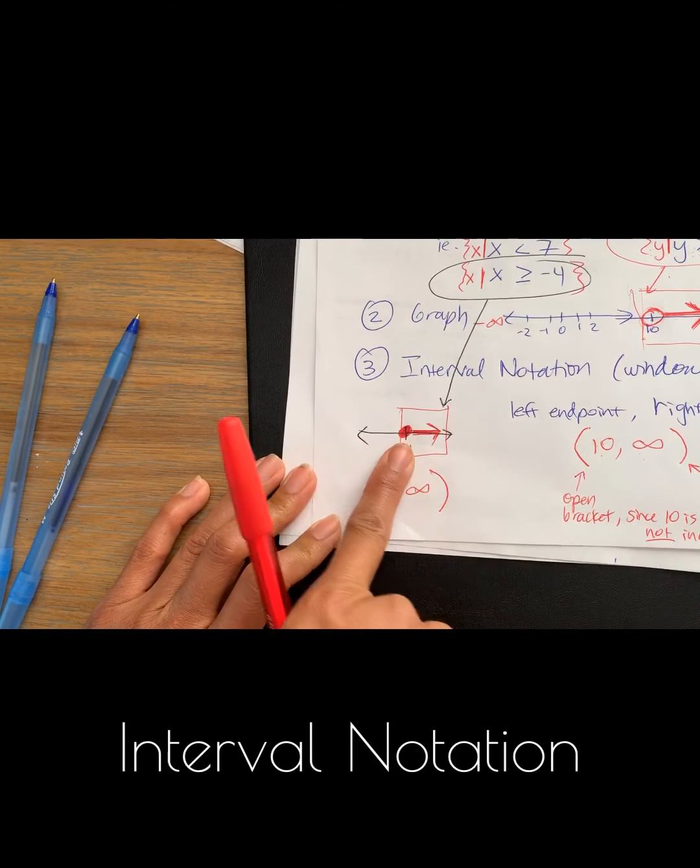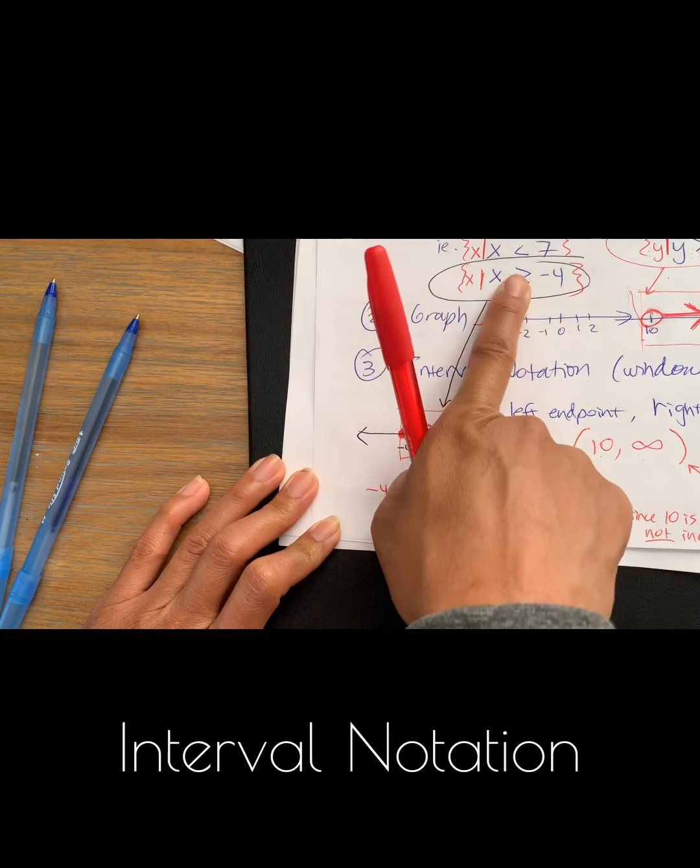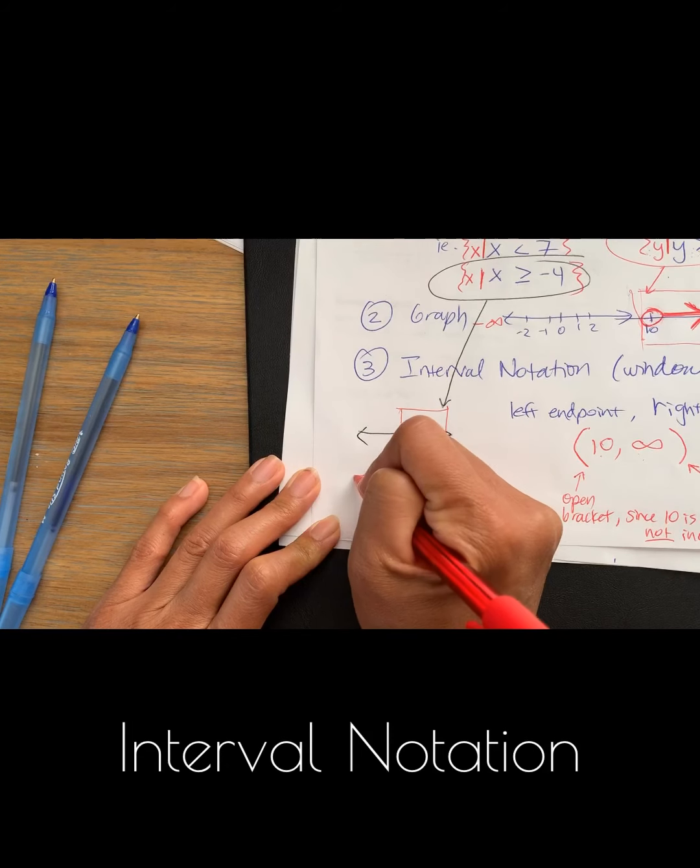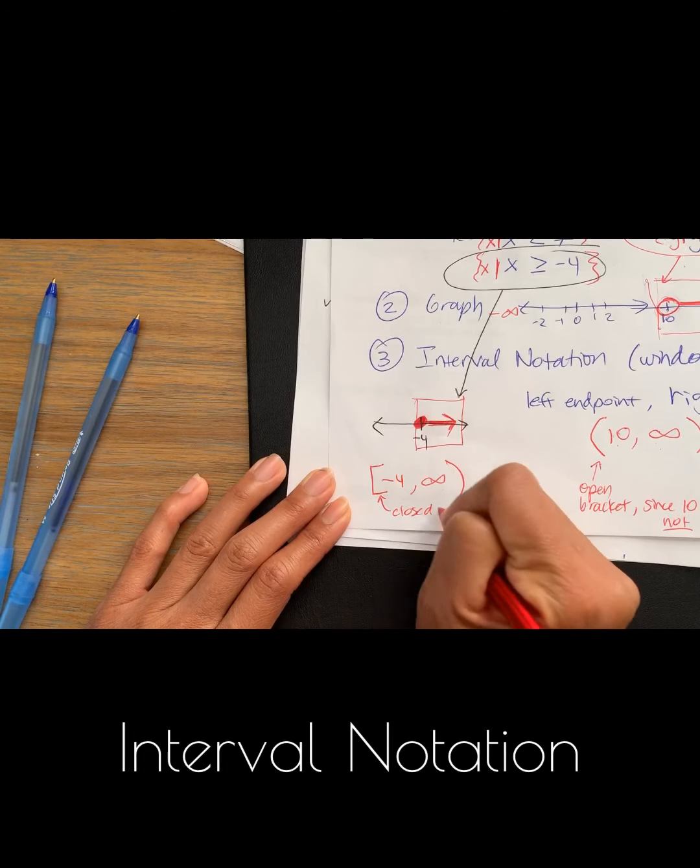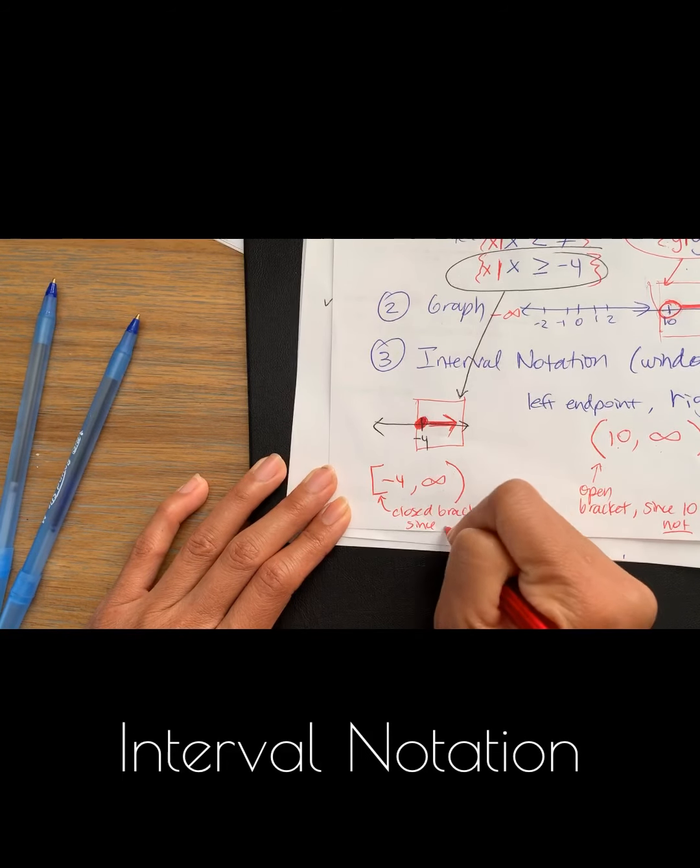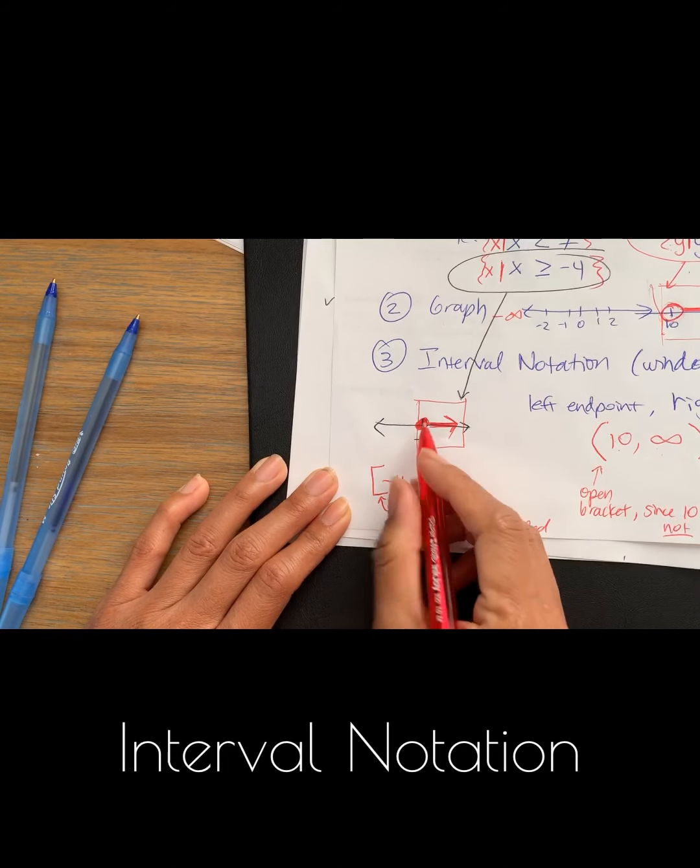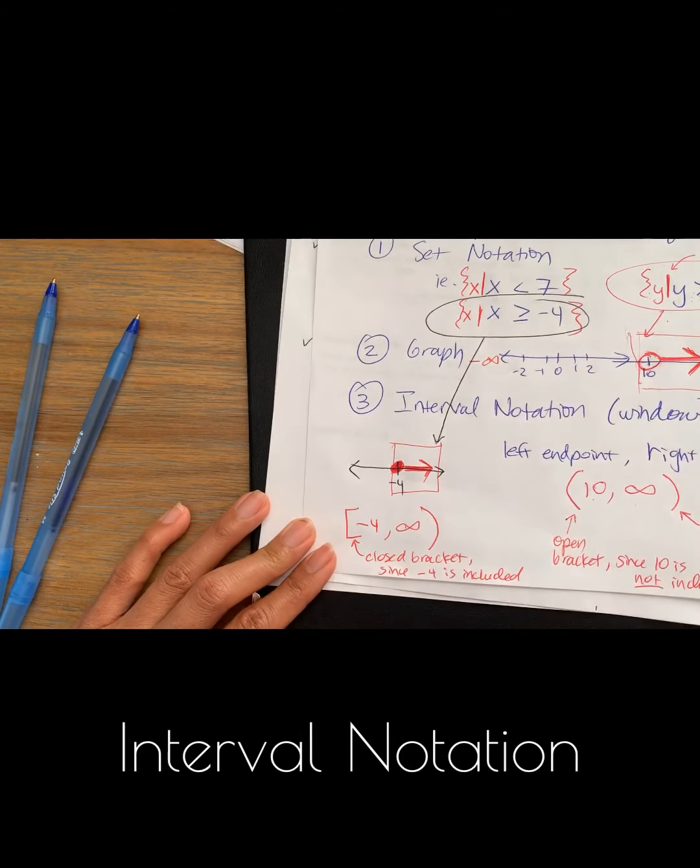That means it includes negative 4, because it's greater than or equal to. So when you have something that includes the endpoint, you make a closed bracket that looks like this. So this is a closed bracket, and we do a closed bracket since negative 4 is included. Since there's a closed circle, or closed dot at negative 4, since it's greater than or equal to.